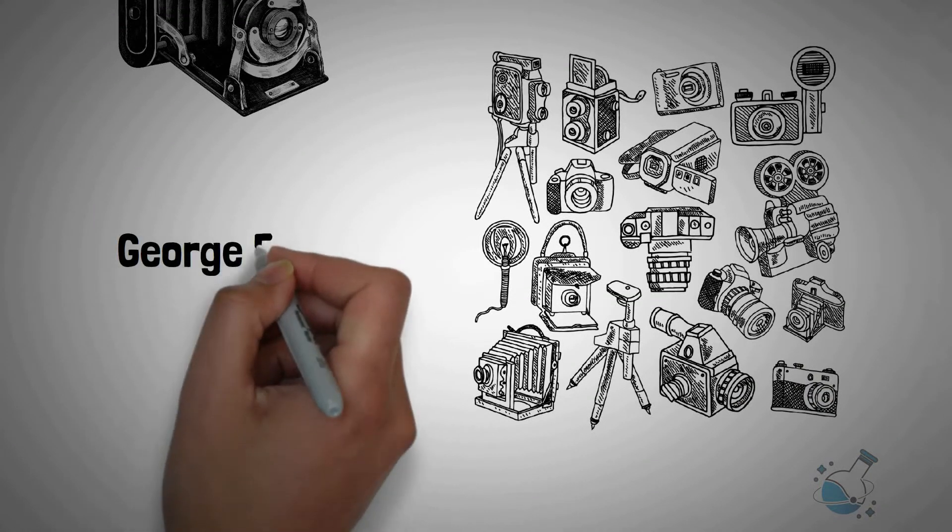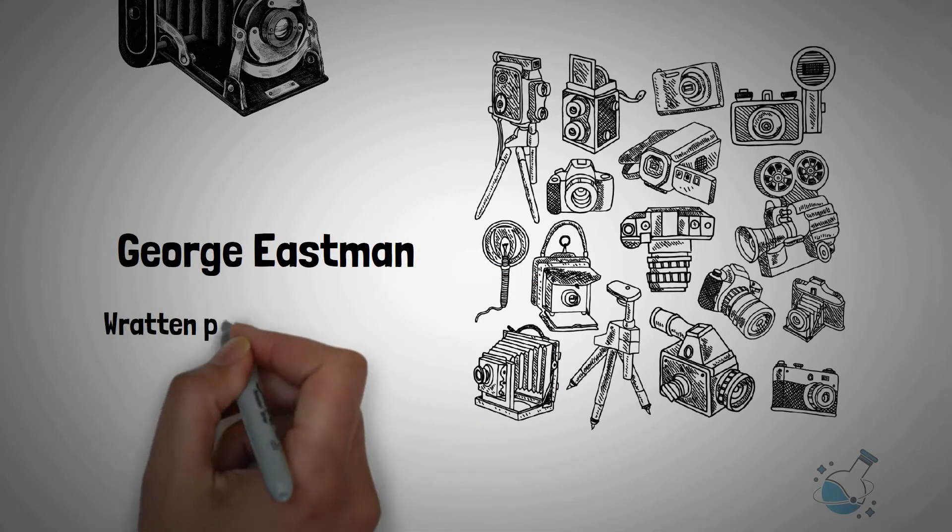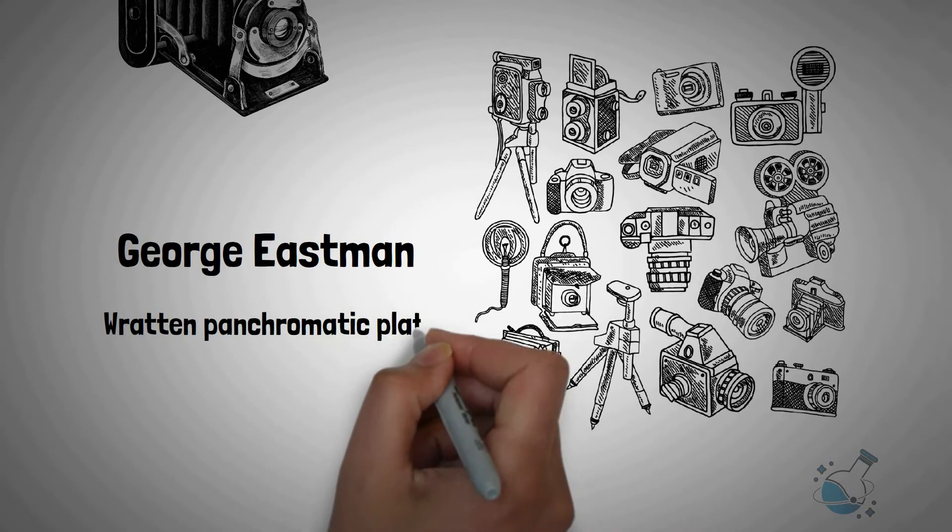Transparent roll film was introduced by George Eastman in 1889, and the famous Wratten panchromatic plates were introduced in 1906.